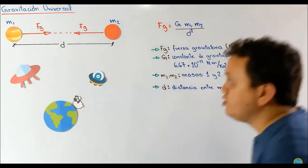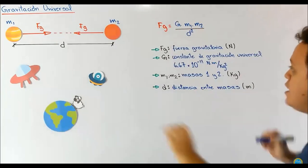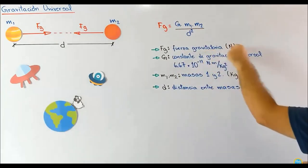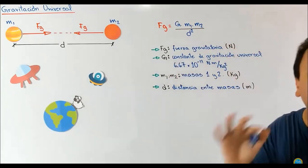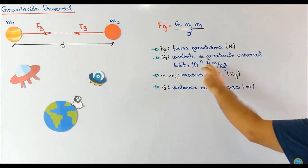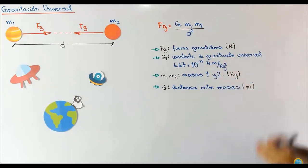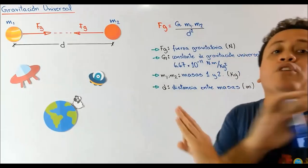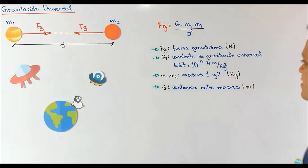¿Cómo podemos calcular el módulo de esta fuerza gravitatoria? Simplemente multiplicando G —la constante de gravitación universal— por masa 1, por masa 2, y dividido entre la distancia entre los centros de estos dos cuerpos elevada al cuadrado. Mucha atención: distancia entre los centros. La fuerza gravitatoria va en newtons. G, la constante de gravitación universal, tiene un valor de 6.67 × 10⁻¹¹ N·m²/kg². Apúntalo en tu cuaderno, pues lo vamos a trabajar a lo largo de todos los problemas.